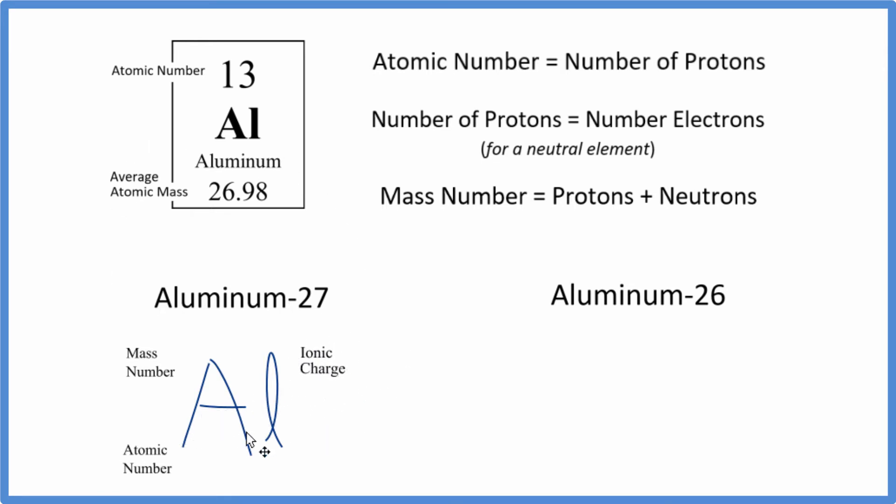When we look at our aluminum here, because we have this isotope of aluminum, aluminum 27, we know the mass number is 27. So we can just write that in, 27.